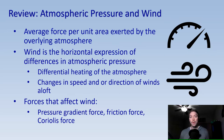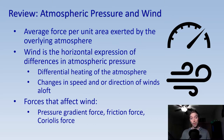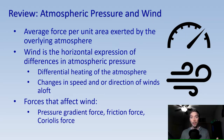Pressure is just the average force per unit area exerted by the overlying atmosphere. It's greatest at sea level, about 1013.25 millibars. Wind is the horizontal expression of differences in atmospheric pressure, caused by differential heating of the atmosphere and changes in speed and direction of winds aloft. Forces that affect wind include the pressure gradient force, the friction force which opposes the wind, and the Coriolis force — the rotational force generated by Earth that works at a right angle to the direction of motion of winds.